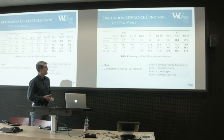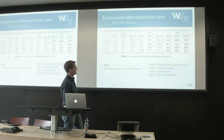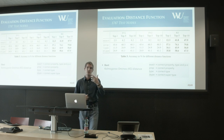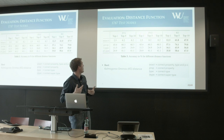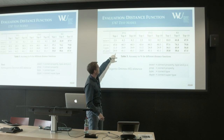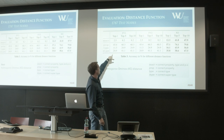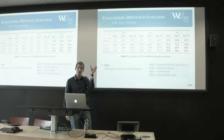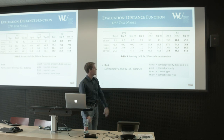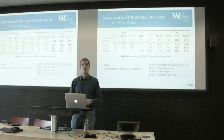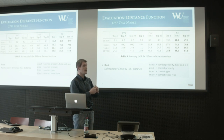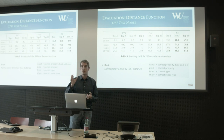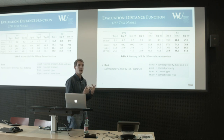Coming to the distance function tests — these are the accuracy results. Property accuracy means: for a given node, we got the right property in the top-1, top-5, or top-10 resources. For type, we got the right type from the type hierarchy. S-type means the correct super type was found — so selecting a basketball player node when the true type is person counts as correct.